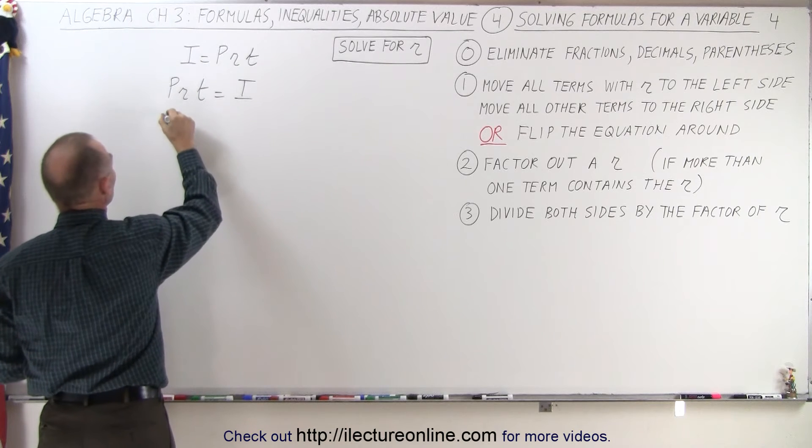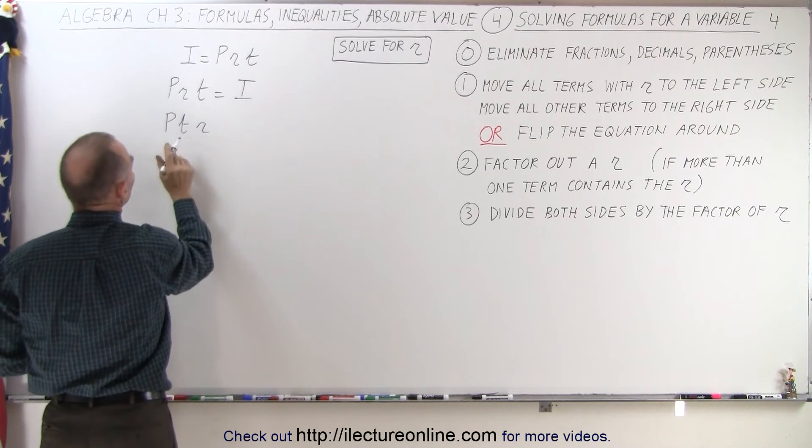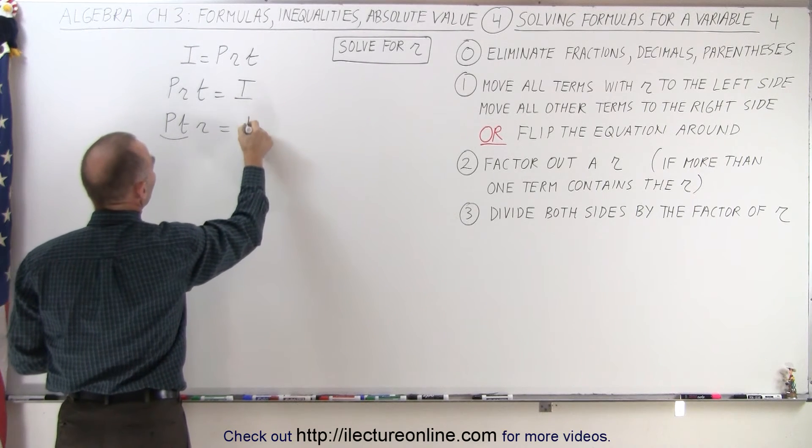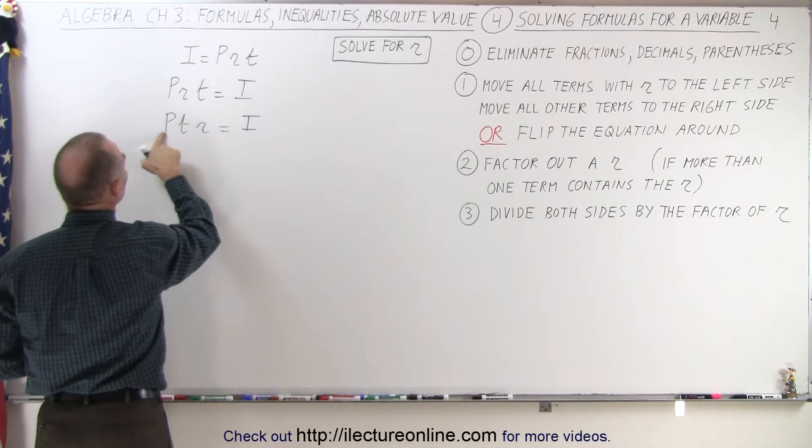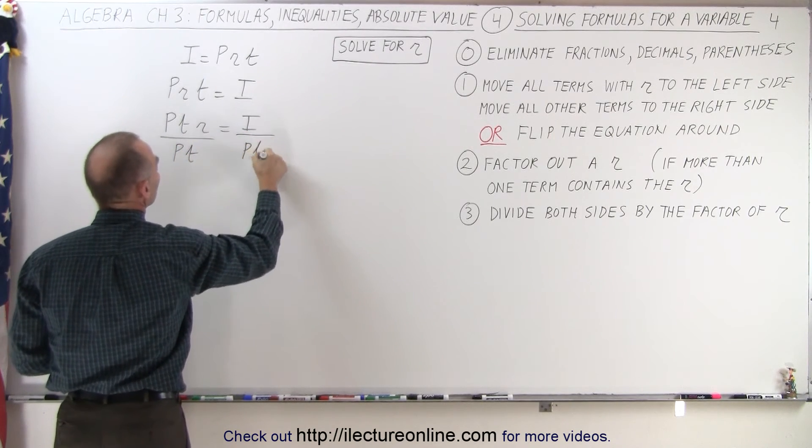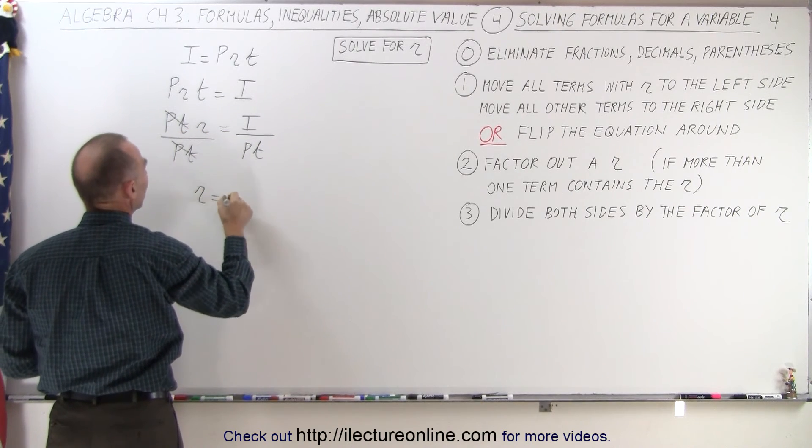We can actually write it like this: we can write P times T times R, recognizing that this here is the factor of R, and that equals I. So now what we can do is divide both sides by P times T, and so this cancels out that, and we end up with R, which is the rate...